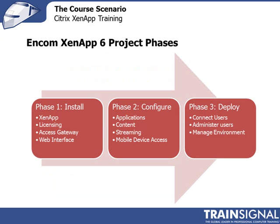So what is Encom's ZenApp 6 project phases? How are we going to approach the implementation of ZenApp 6 at Encom? Phase one: we're going to install ZenApp 6, make sure licensing is working, deploy the access gateway to grant remote secure access, and configure the web interface so that local or WAN users can connect to a web page and launch applications that way.